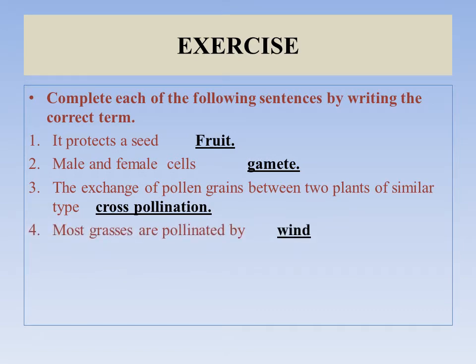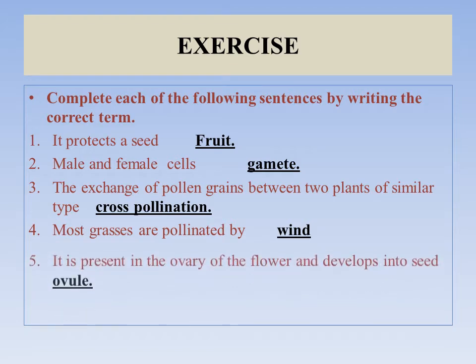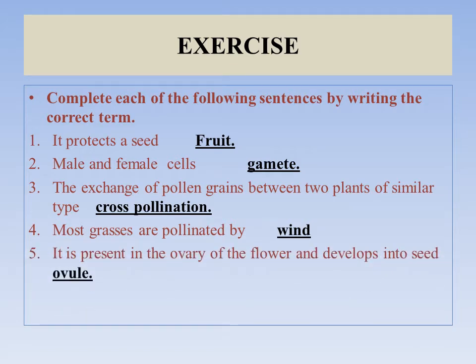Most grasses are pollinated by wind. It is present in the ovary of the flower and it develops into the seed, so the answer is ovule or egg.